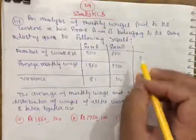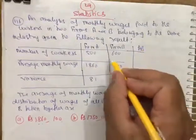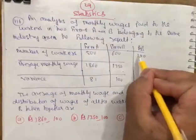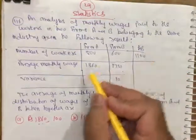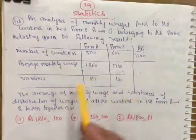Now a new table combining A and B, with the total number of workers being 1100. We need to find the monthly average wages and the variance for this combined group.